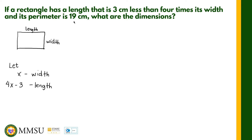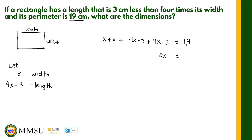Performing the algebraic operations: x plus x plus 4x plus 4x gives 10x. We also have minus 3 and minus 3 on the left side. Transposing these to the right side gives plus 6, so 10x equals 19 plus 6, which is 25. Dividing both sides by 10, therefore x is equal to 2.5 centimeters.